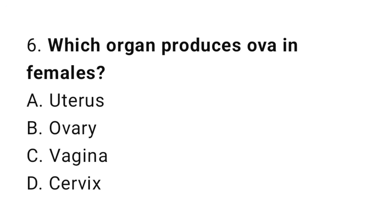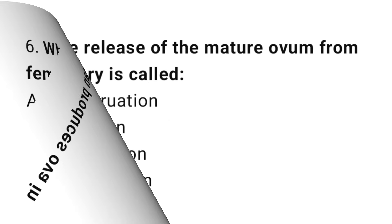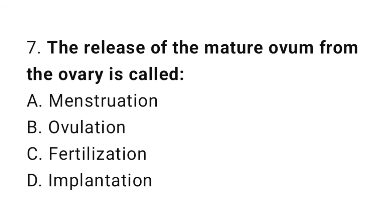Question number 6: Which organ produces ova in females? The correct answer is B, Ovary. Question number 7: The release of the mature ovum from the ovary is called? The correct answer is B, Ovulation.